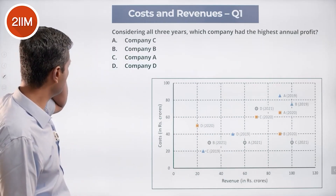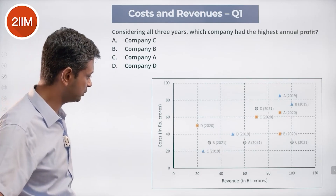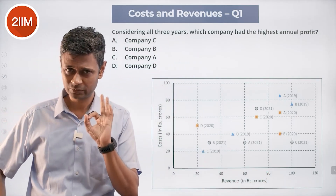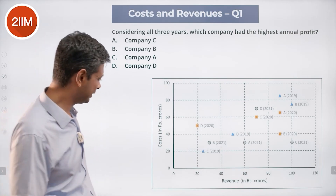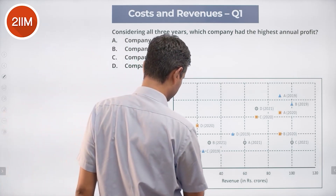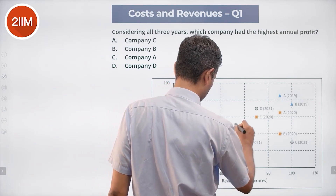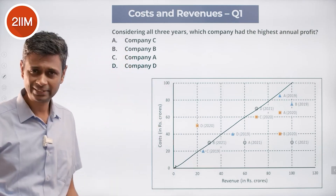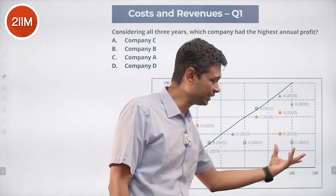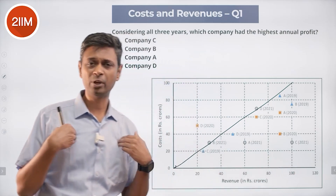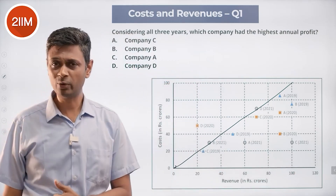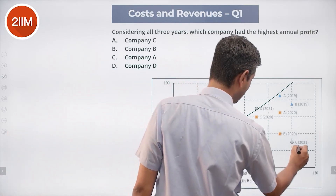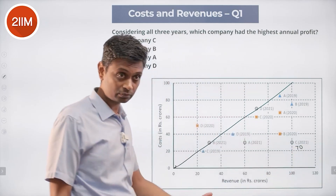Considering all three years, which company had the highest annual profit? High revenue and low cost is the profit territory. I like to draw a line and identify a happy quadrant — the bottom right is my happy quadrant, top left is my unhappy quadrant. Adding some numbers: company C in 2021 earned 100 minus 30, which is 70 crore profit. I already like C.